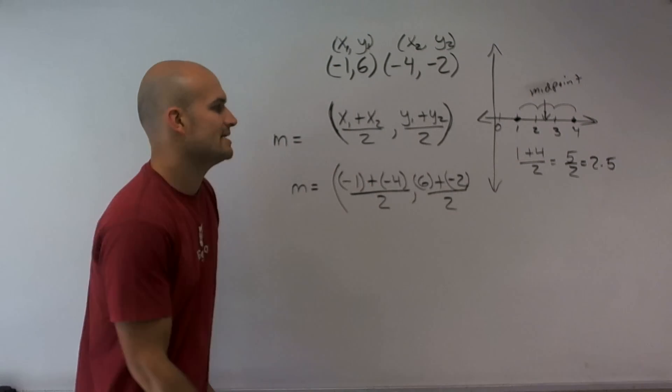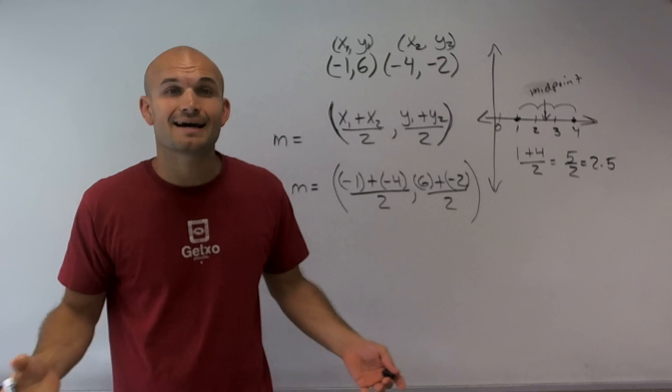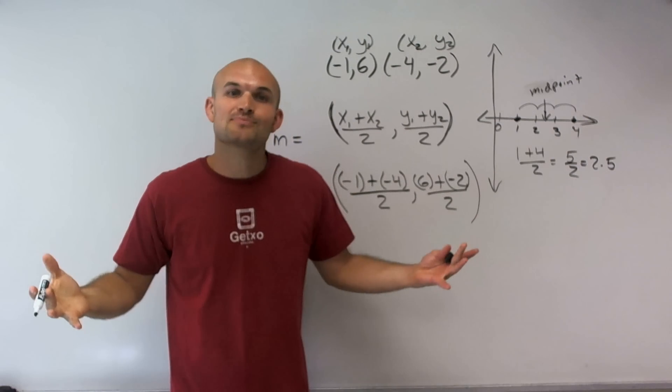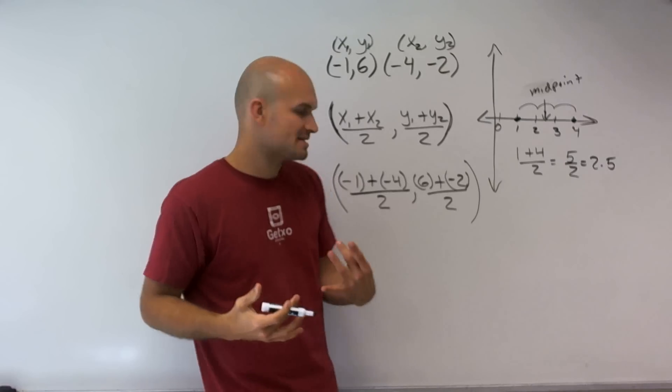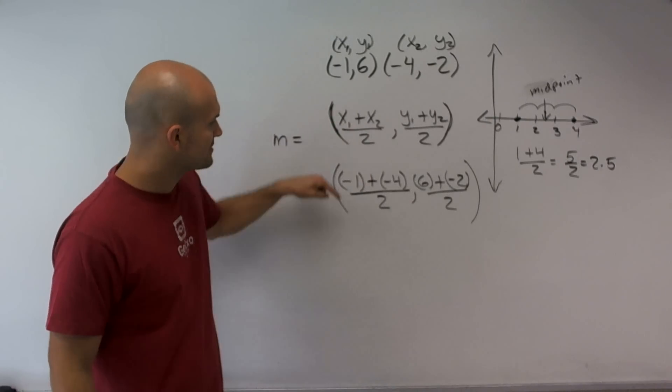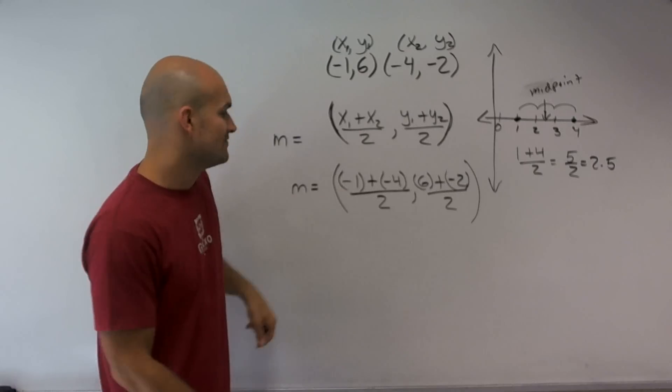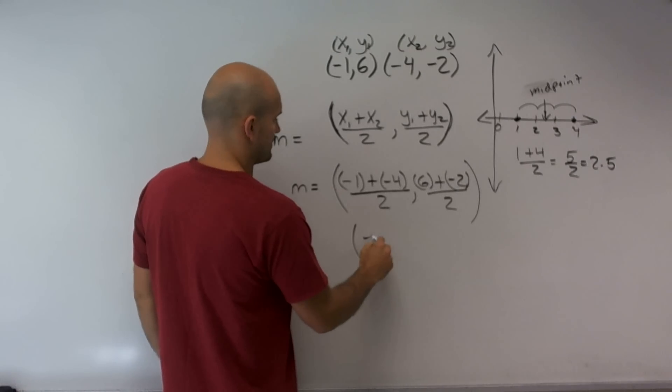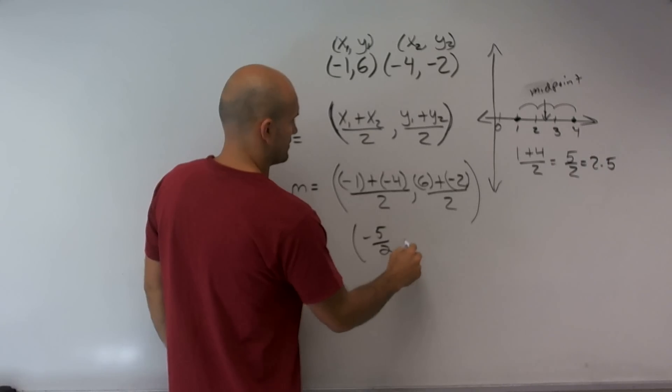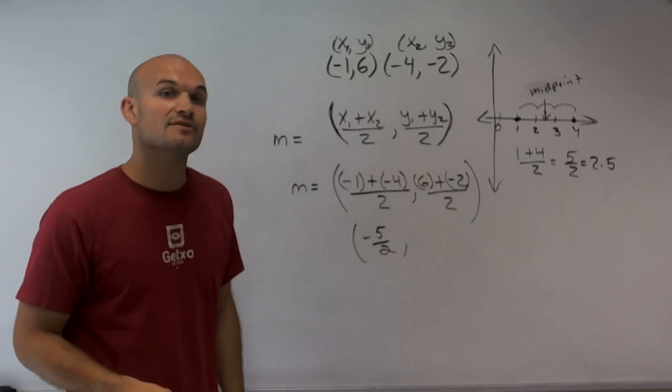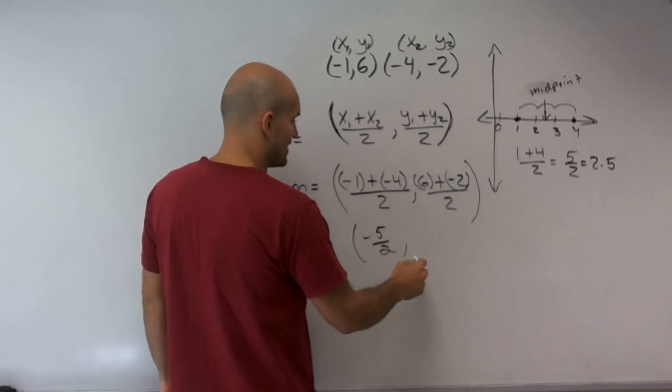And the reason why I say always put in your parentheses is I work with students all the time that always forget those parentheses, and that's a lot of time where mistakes come from. So now let's just do the math. Negative 1 plus negative 4 is a negative 5 divided by 2, comma, 6 plus negative 4 is 4 divided by 2.